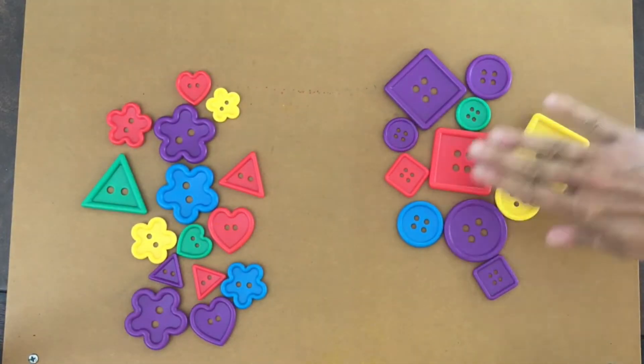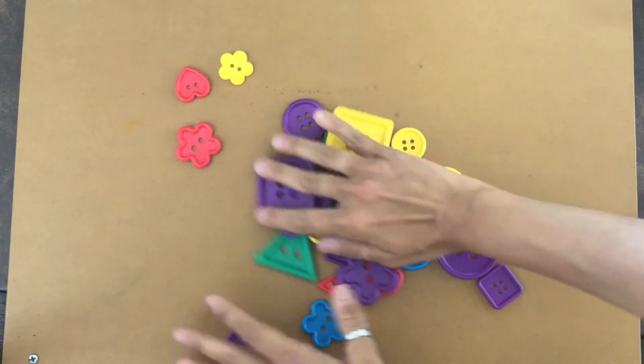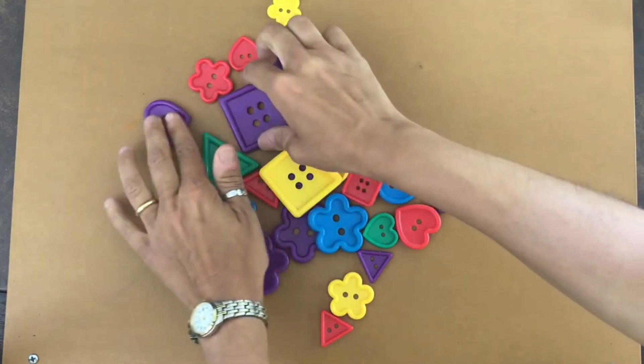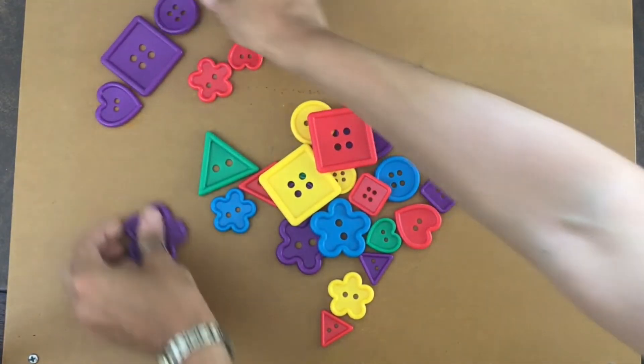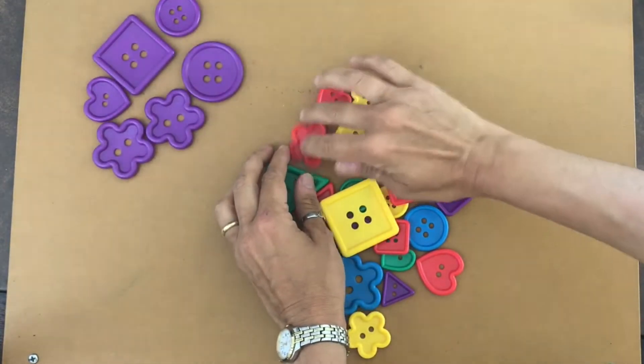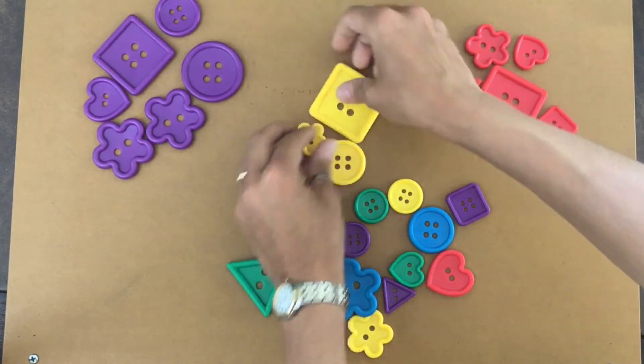Okay, now I'm gonna put them back together, mix them up. Now I'm going to sort them into different colors. So I'm gonna put the purple ones together and the red ones together.